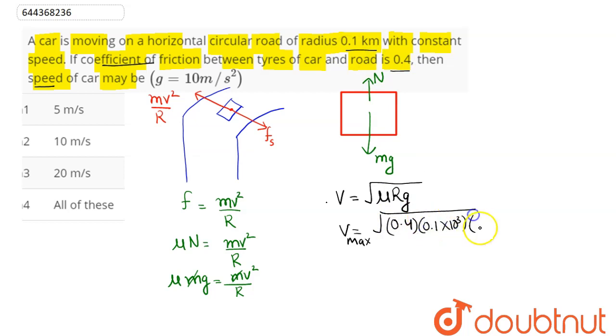Next, we can say here g value is 10, so this here on simplification comes out to be square root of 400. So 400 means this comes as 20 meter per second. Hence we can say